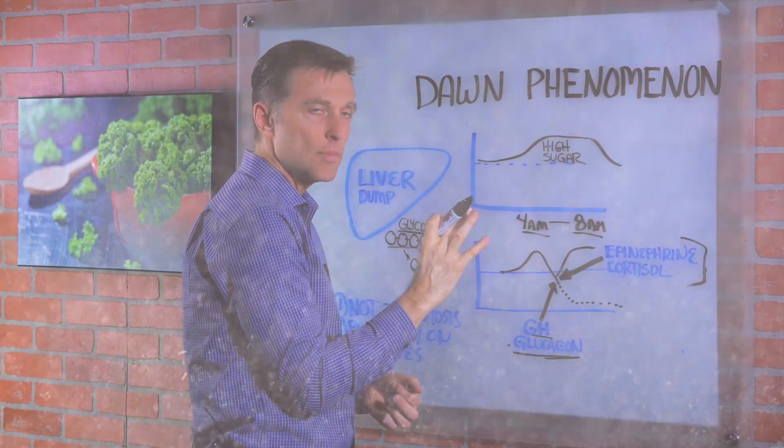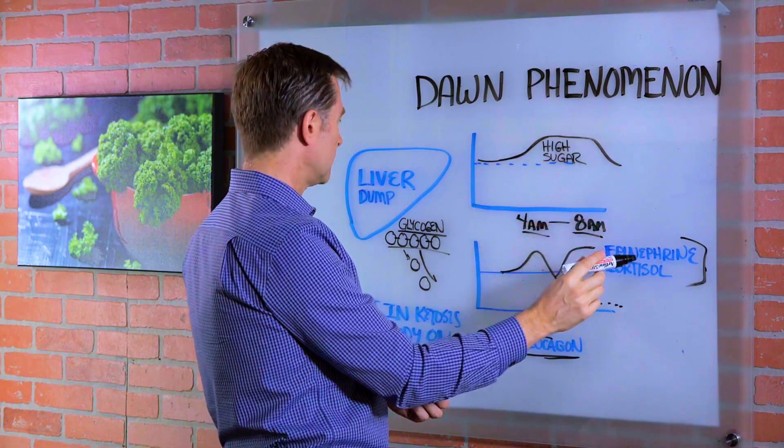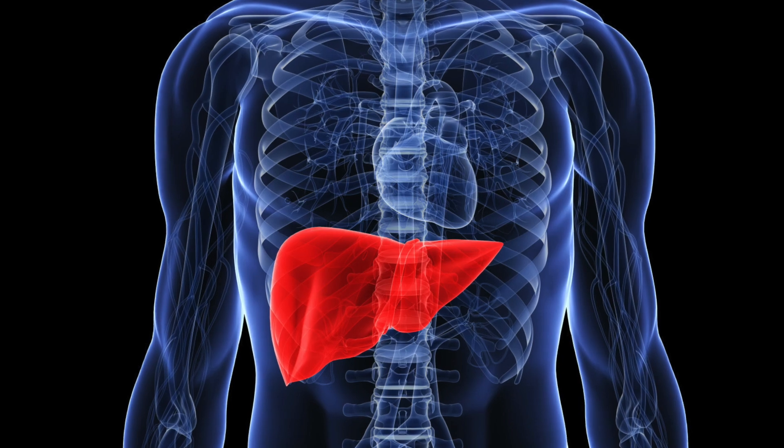And that's really what's spiking this. It's a counter hormonal effect that is causing these hormones to dump stored sugar from the liver.